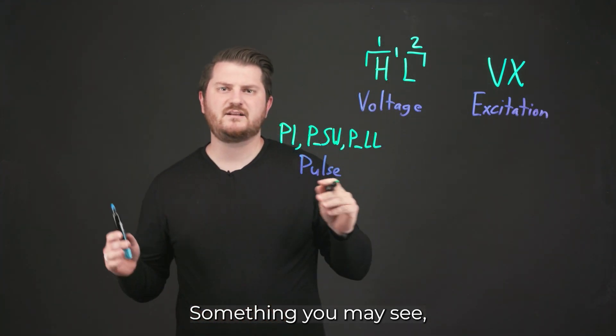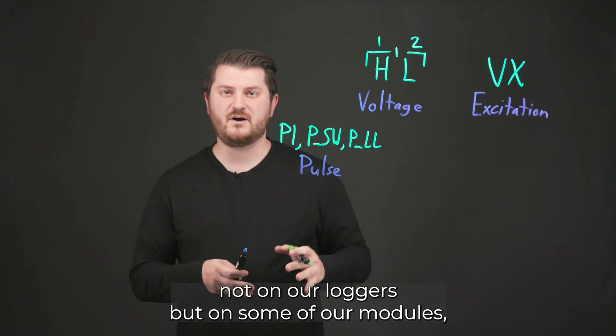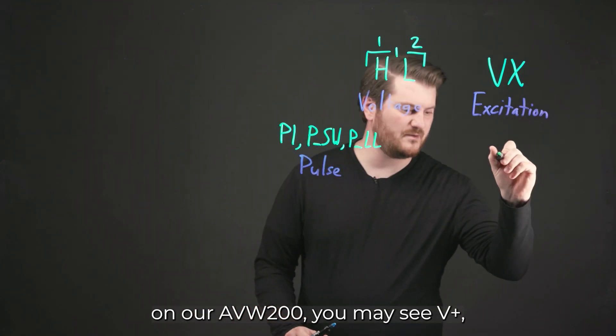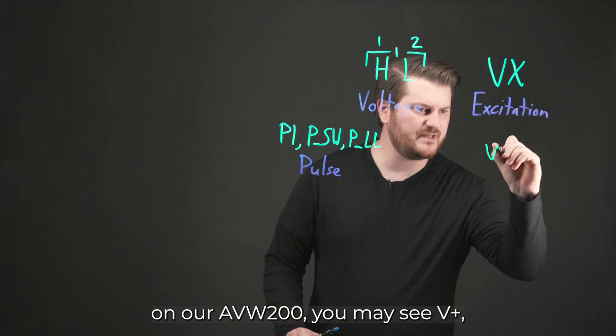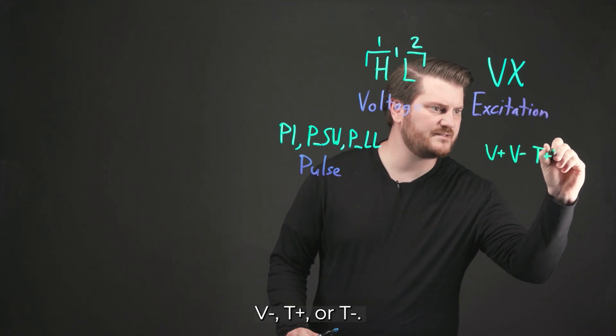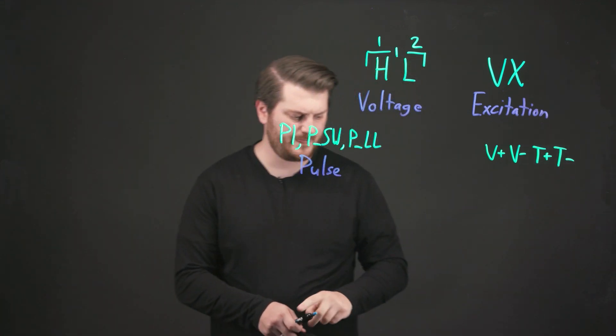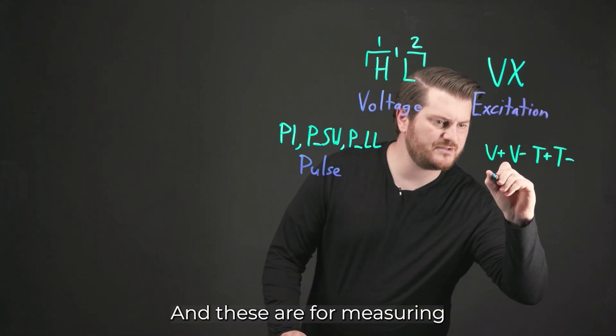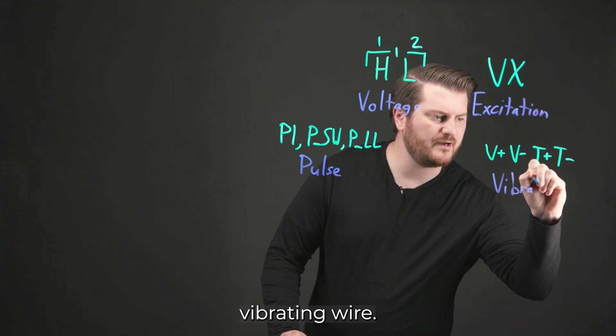Something you may see, not on our loggers but on some of our modules, on our AVW200, you may see V plus, V minus, T plus, or T minus, and these are for measuring vibrating wire.